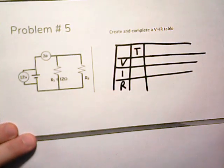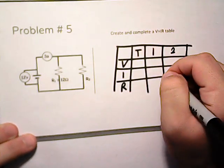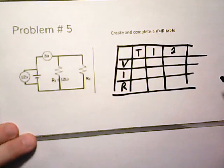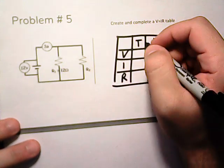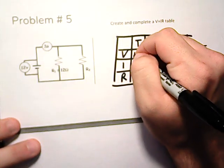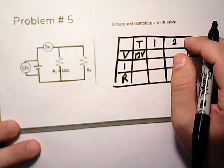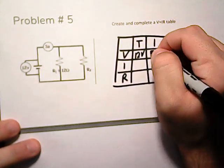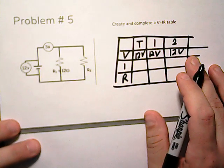We have our total and we have one and two. So our total voltage is going to be given to us here as 12 volts. Since this is a parallel circuit, the voltage is the same at all points. So note each of these are going to have a voltage of 12.